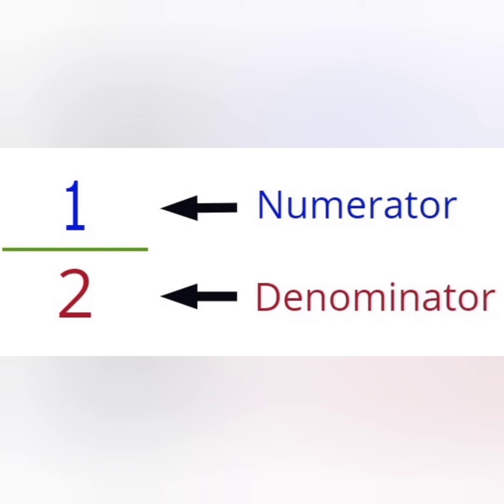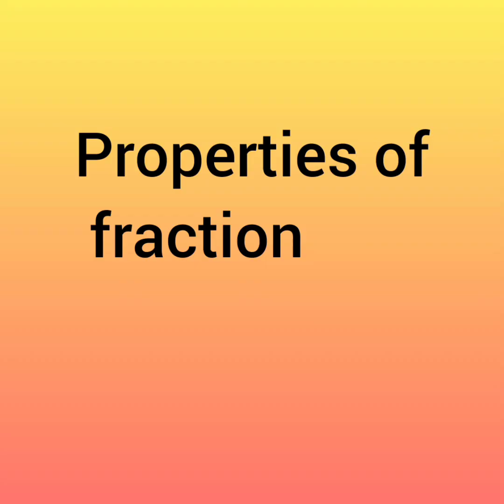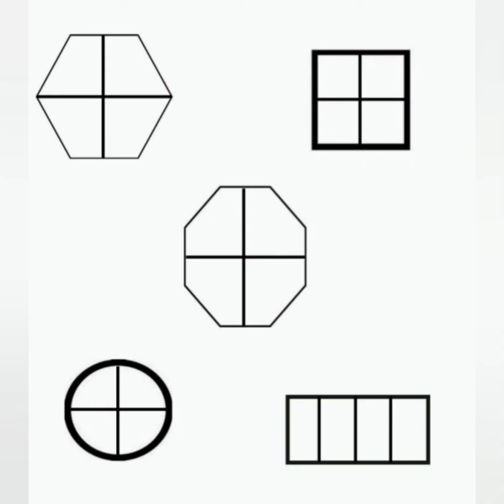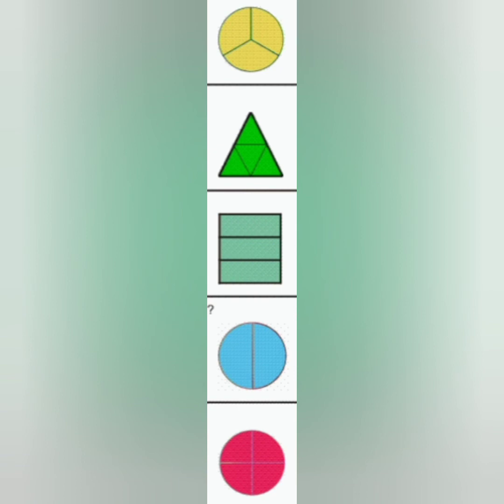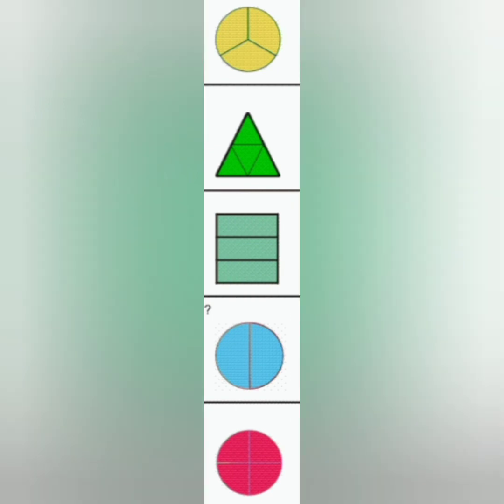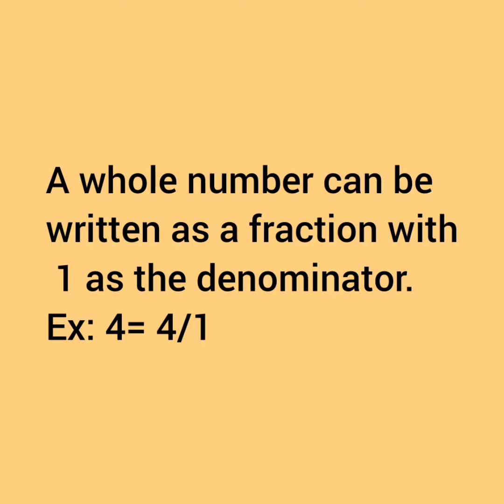Now, let us see the properties of fraction. When there are no shaded parts, we call it as zero. There is no fraction, since the parts divided is not shaded. Same way, when the numerator and the denominator are same, that is all the parts are shaded, we call it as whole number one. A whole number can be written as the fraction with one as the denominator.